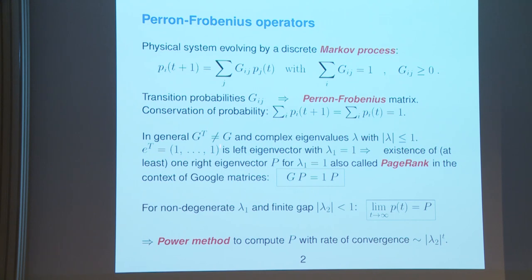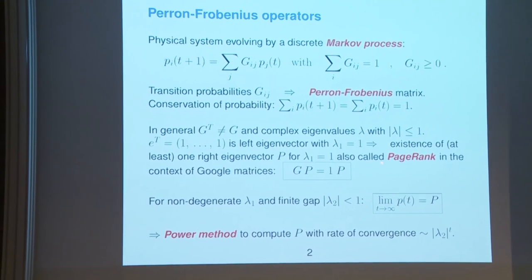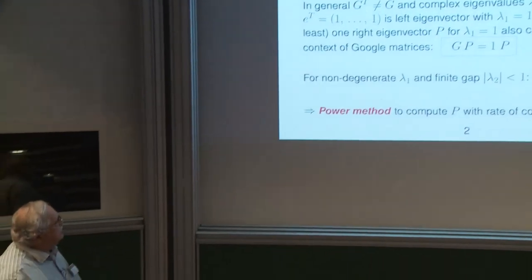In general, this matrix need not be symmetric — that's important. Therefore, we have complex eigenvalues. This column-normalization property shows that all eigenvalues are inside or on the unit circle. We have one trivial left eigenvector, the unit vector with all entries 1, giving eigenvalue 1. Then we need the right eigenvector, which is less trivial, and which we call PageRank in the context of Google matrices.